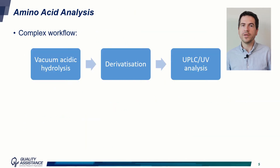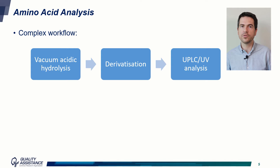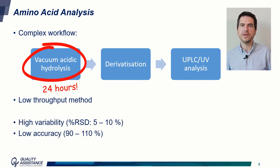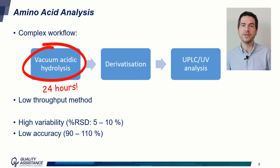Let's say a few words about amino acid analysis or AAA, which is usually considered as the go-to analysis for absolute protein quantification. The workflow is quite complex, with a hydrolysis under acidic conditions and under vacuum, followed by a derivatization of the amino acids obtained, and then a UP-LC-UV analysis. The LC-UV step is very quick but the hydrolysis takes up to 24 hours — it is therefore a low-throughput method. But the main drawbacks are the high variability and the low accuracy. This low precision and accuracy will translate into the determination of the extinction coefficient. So there is clearly a need for a better method.